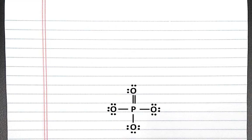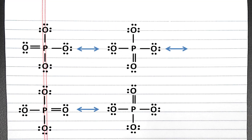We know that this is one valid Lewis structure, but we could have created the double bond with any of the four oxygen atoms. So we can create these four resonance structures for the phosphate anion.